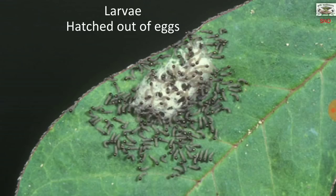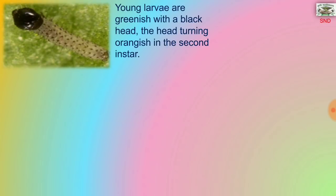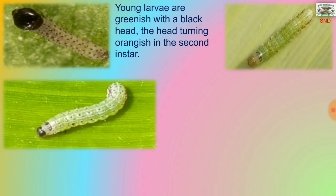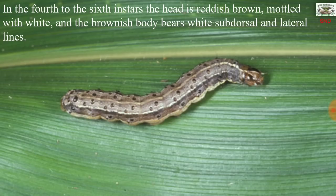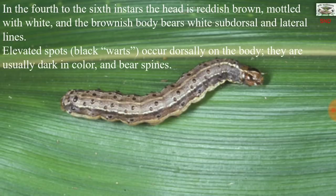The larvae hatched out of the egg mass are greenish with a black head, the head turning orangish in the second instar. In the second but particularly the third instar, the dorsal surface of the body becomes brownish and lateral white lines begin to form. In the fourth to sixth instar, the head is reddish brown mottled with white, and the brownish body bears white subdorsal and lateral lines. The elevated spots, also called black warts, occur dorsally on the body and are usually dark in color and bear spines.